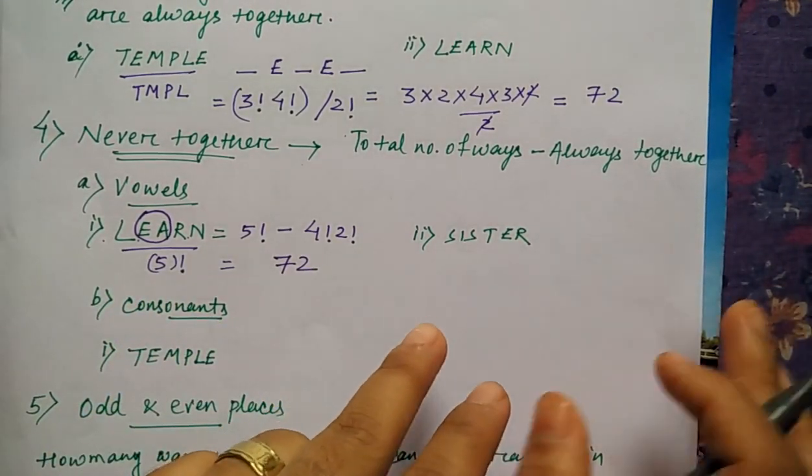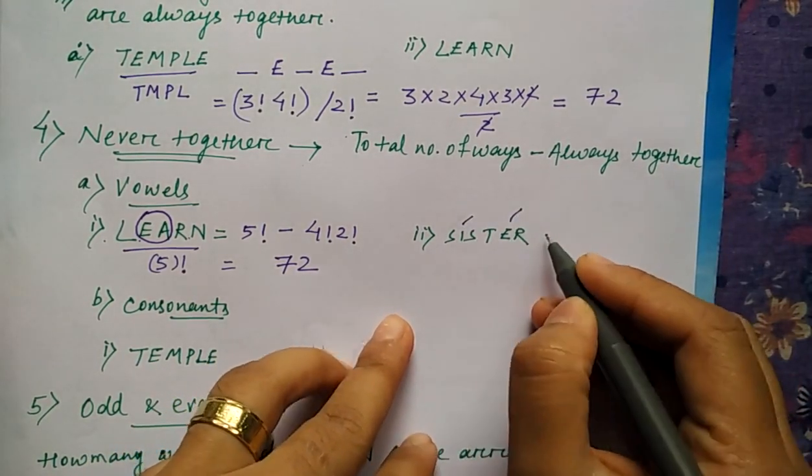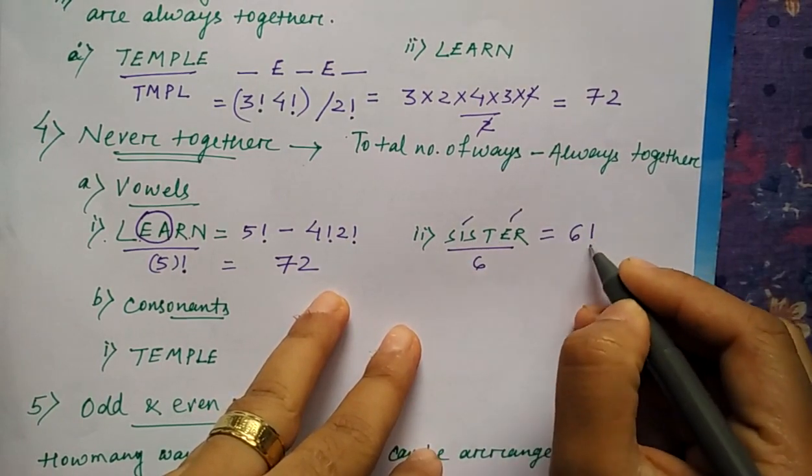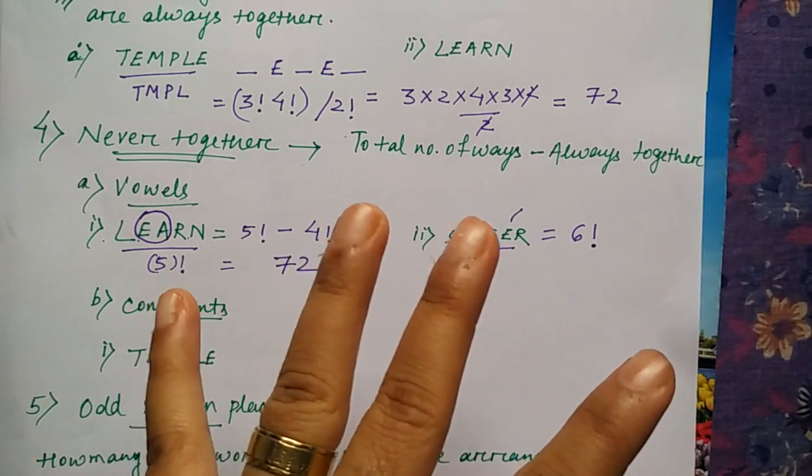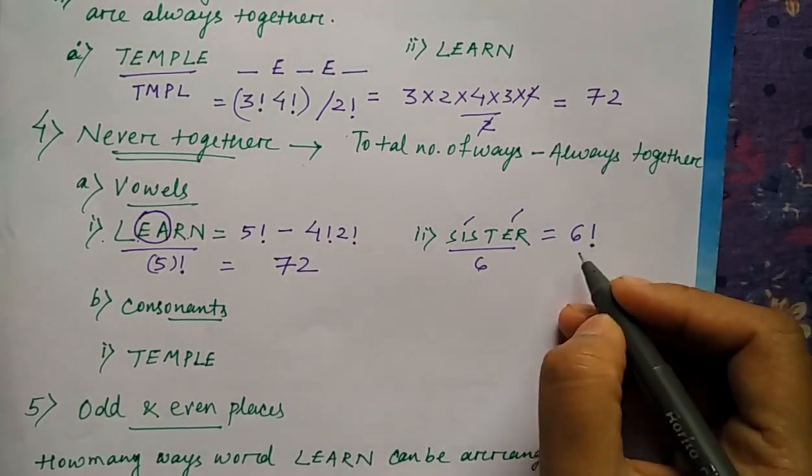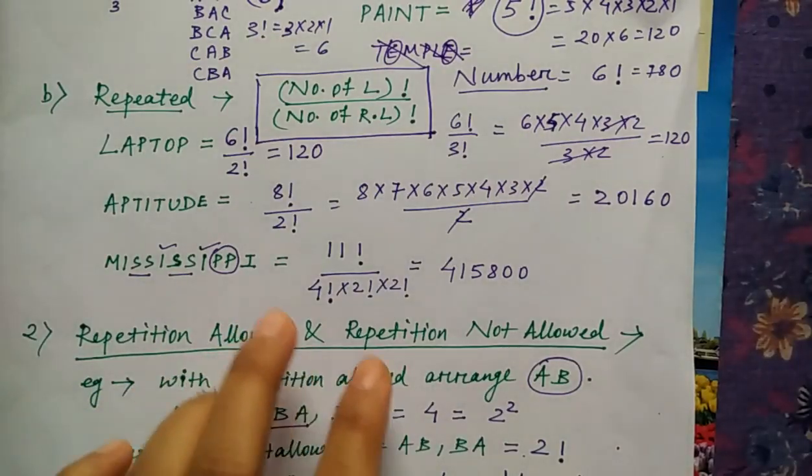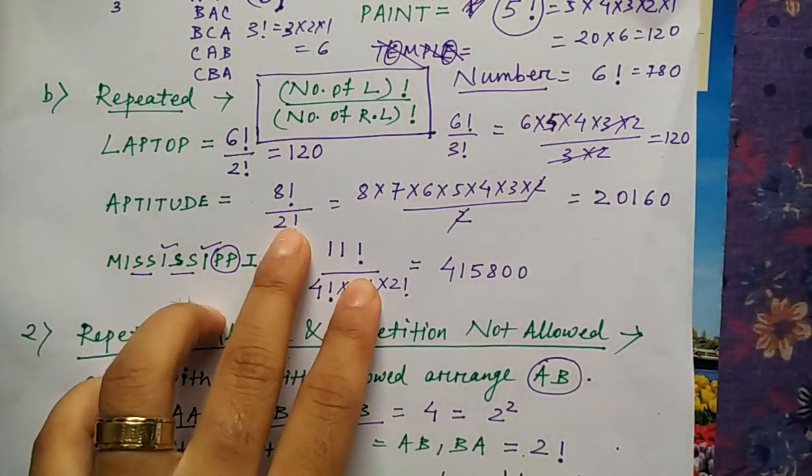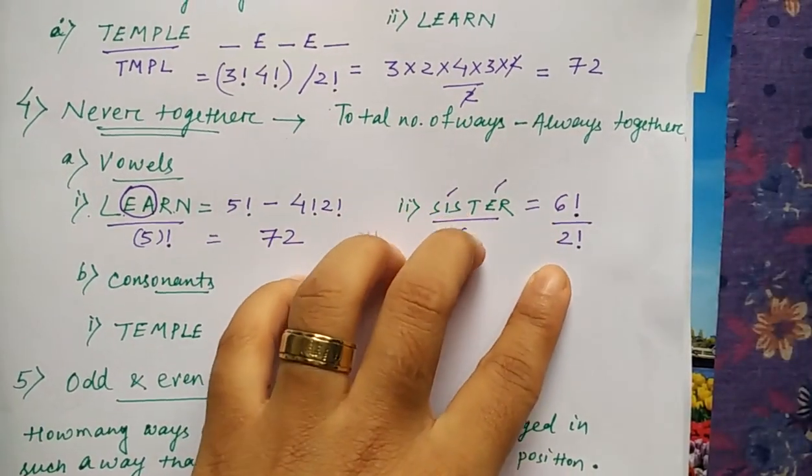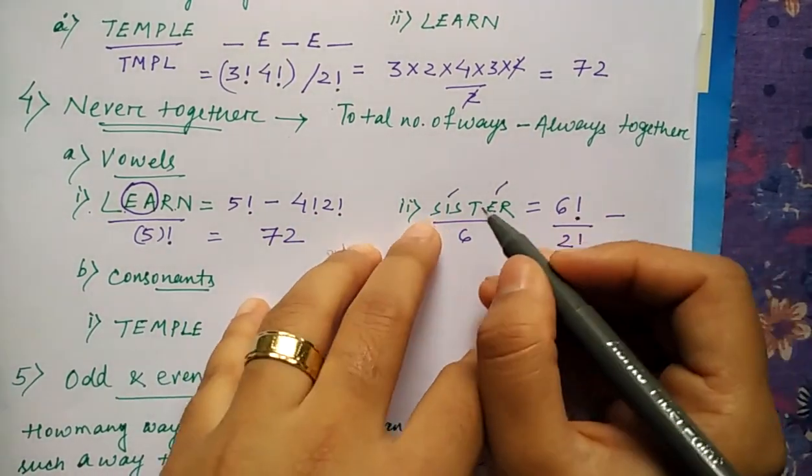So the same way we will see here in the word sister what are the vowels you have got? Two and total is six. Right? One, two, three, four, five, six. So six factorial. So six factorial. Then again in sister repetition is there. S is present twice. So six factorial divided by two factorial. Why I am dividing? Because we have seen that wherever repetition is there we used to divide. So the same way for sister we are dividing here minus always together.